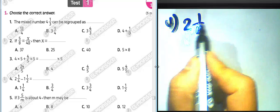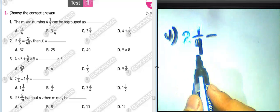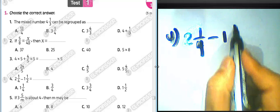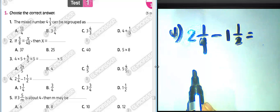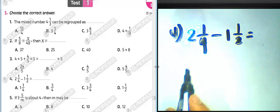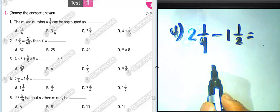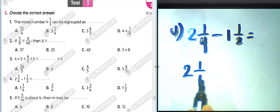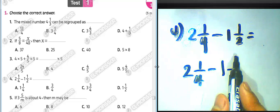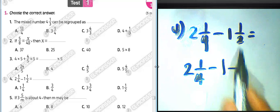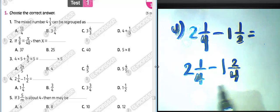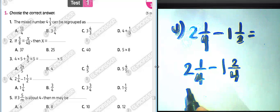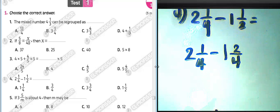Question number four: two and one over four subtract one and one over two. We find the least common multiple between four and two, which is four. We write two and one over four, then convert one over two: two times two equals four, two times one equals two. Since one minus two is not possible, we must borrow one from the whole number.